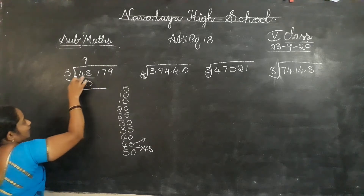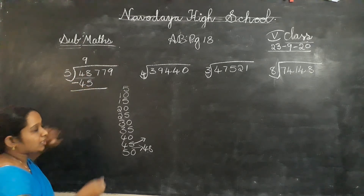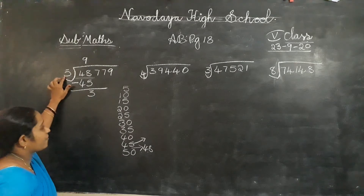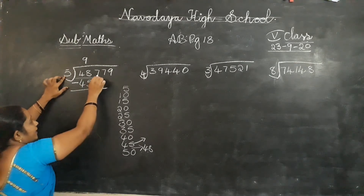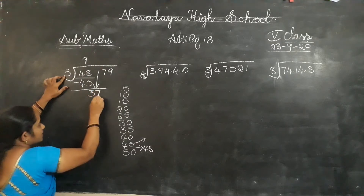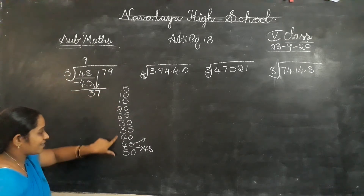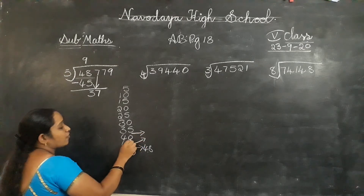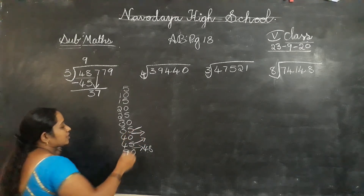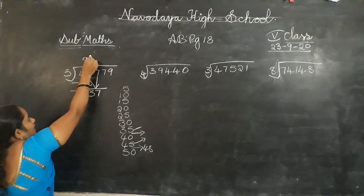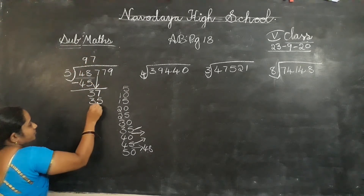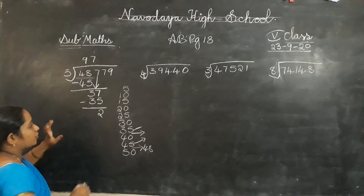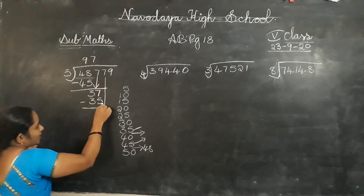9 times. 5 nines are 45. Minus — do subtraction. 8 minus 5 is 3, 4 minus 4 is 0 — no need to write 0. So 3 divided by 5 — is it possible? No. Write down the next digit: 37.